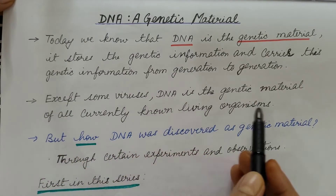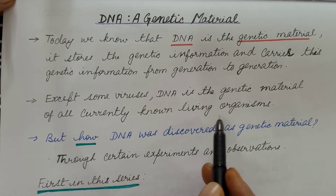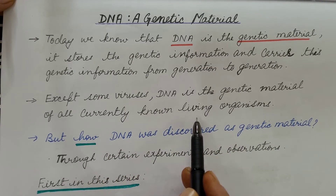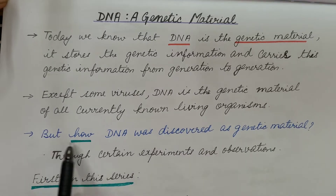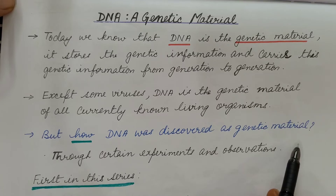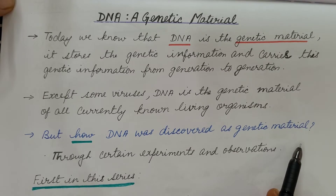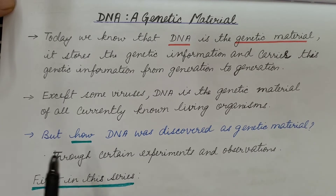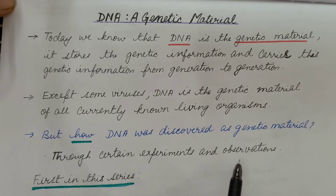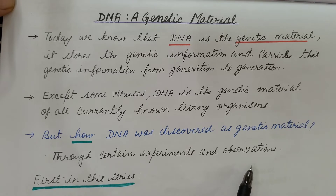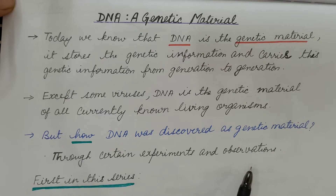Except some viruses, DNA is the genetic material of all currently known living organisms, so most living organisms have DNA as the genetic material. But how was DNA discovered as genetic material? How was it found that the genetic material present in most living organisms is DNA? It was found through certain experiments and observations. Today we are going to discuss a series of experiments which led to the conclusion that DNA is the genetic material.